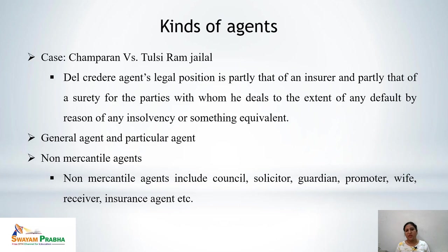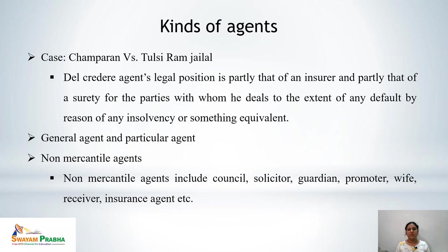The next category distinguishes general agents from particular agents. A general agent is appointed for all transactions of a business; a particular agent is appointed for a specific transaction only. The non-mercantile agents — as opposed to mercantile agents such as the commission agent, broker, and del credere agent — include counsel, solicitor, guardian, promoter, wife, receiver, insurance agent, and so on.